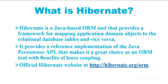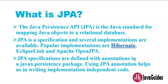JPA specifications are defined with annotations in the javax.persistence package. Using JPA annotations helps us write implementation-independent code. For example, if you are using Hibernate in your application, you can replace Hibernate with EclipseLink because JPA is a specification — it helps us write implementation-independent code.